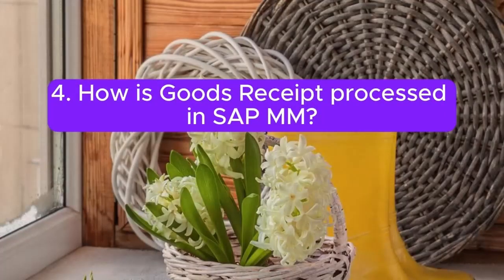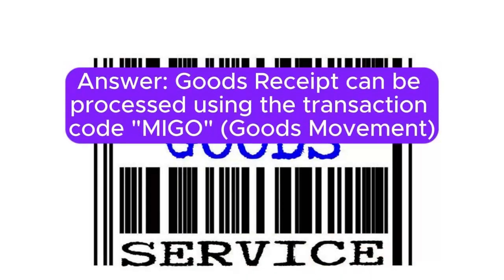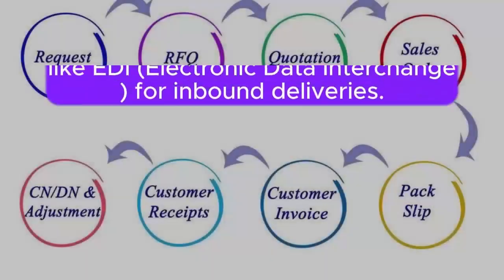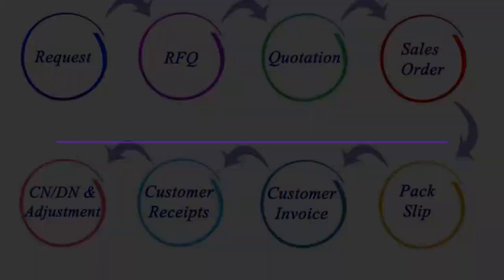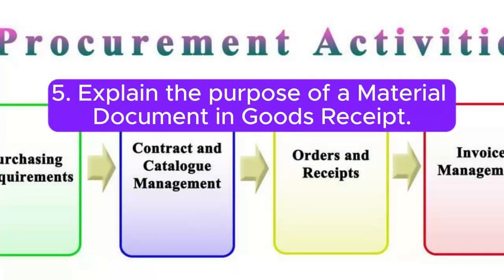Question 4: How is goods receipt processed in SAP MM? Answer: Goods receipt can be processed using the transaction code MIGO (Goods Movement), or through automated processes like EDI (Electronic Data Interchange) for inbound deliveries.